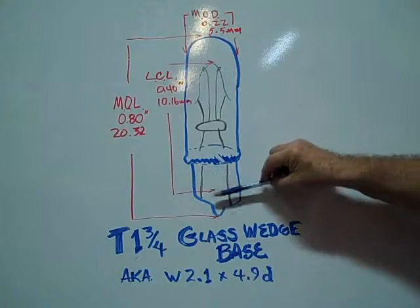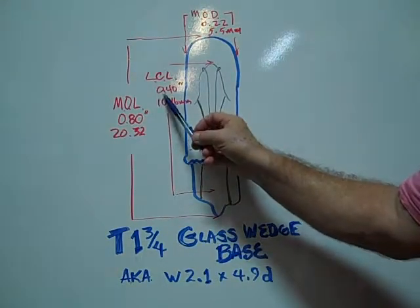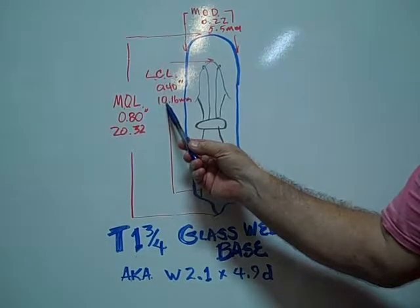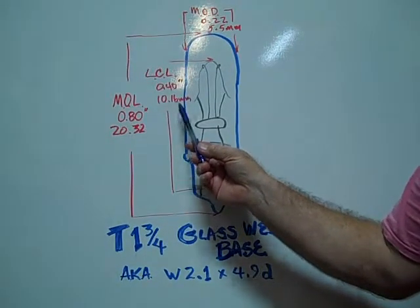The light center length is 0.40 inches, 10.16 millimeters.